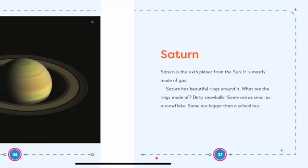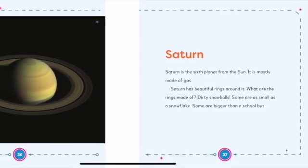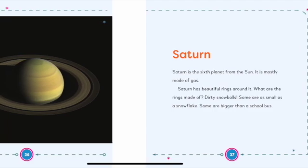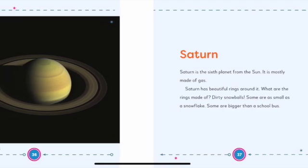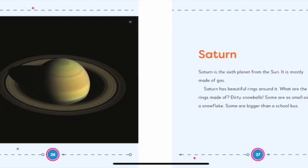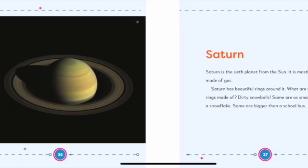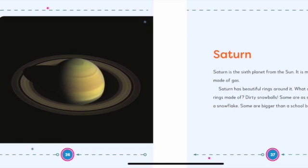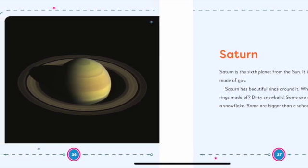Saturn. Saturn is the sixth planet from the Sun. It is mostly made of gas. Saturn has beautiful rings around it. What are the rings made of? Dirty snowballs. Some are as small as a snowflake. Some are bigger than a school bus.